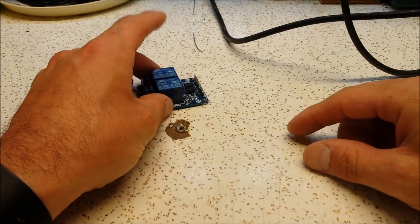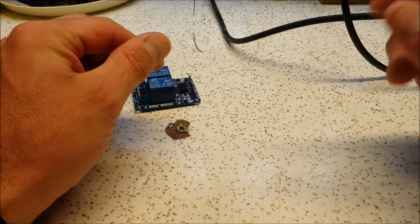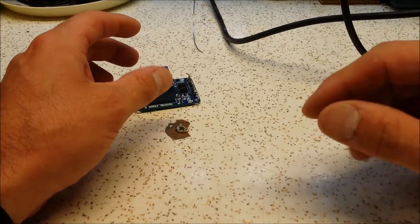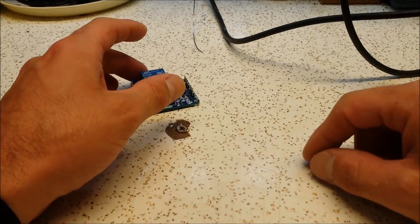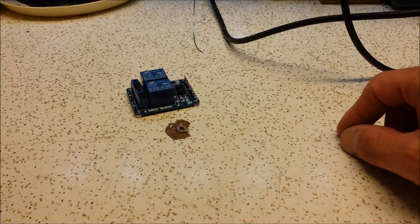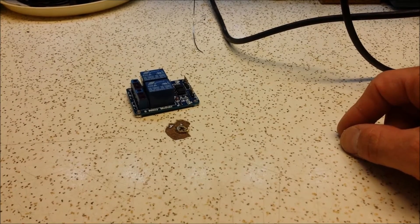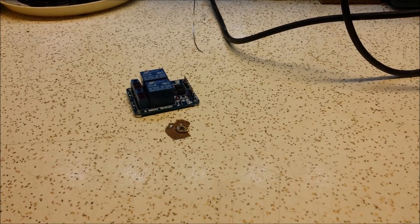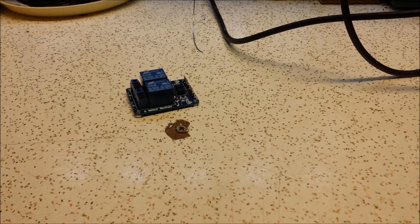Now, if you don't know, a power switch tail is essentially a black box that has low voltage wires going into it and then also high voltage wires. By high voltage I mean here in the United States we use 120 volts. So that's your regular wall plug that looks like this.